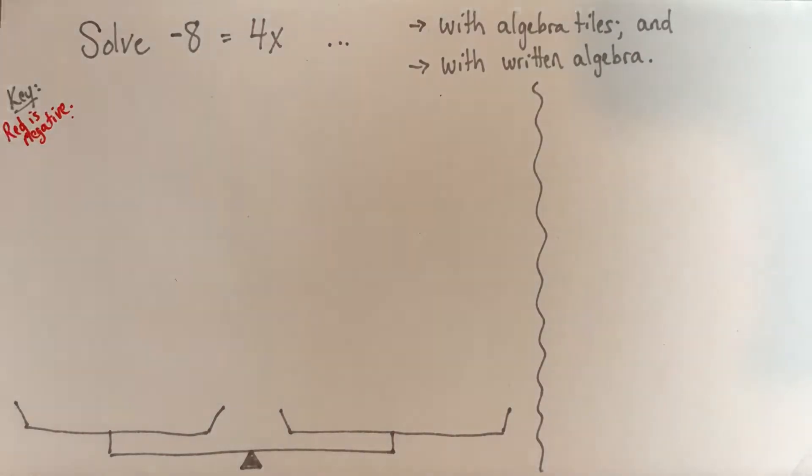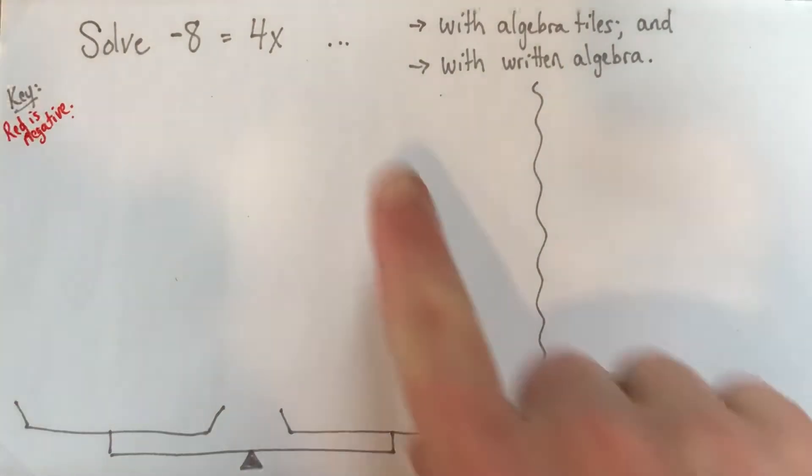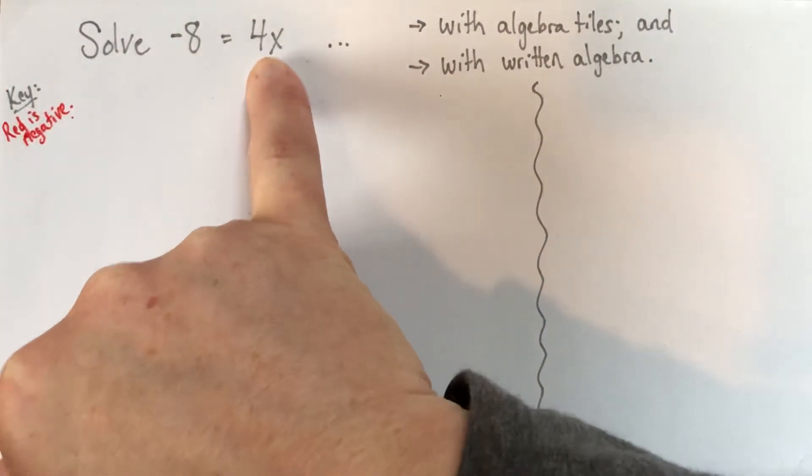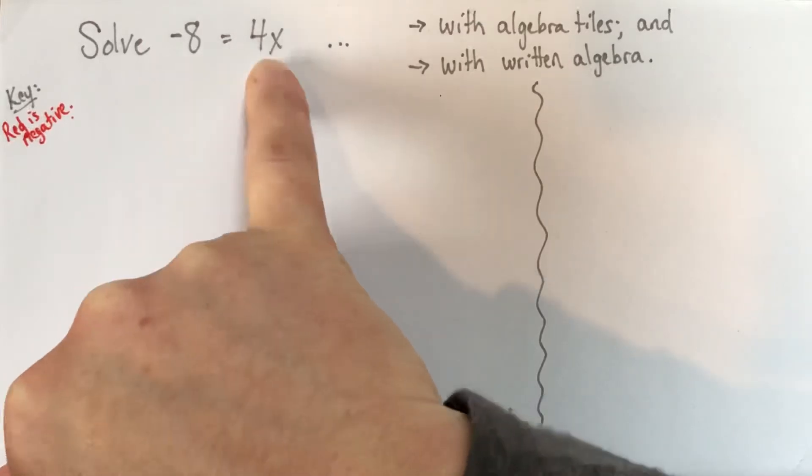Okay, so negative 8 equals 4x. So negative 8 is the same as 4x, and you may already know what x is. But what we're going to look at is how we can write out a nice solution and how we can act it out with tiles.